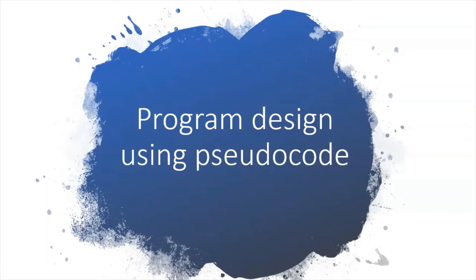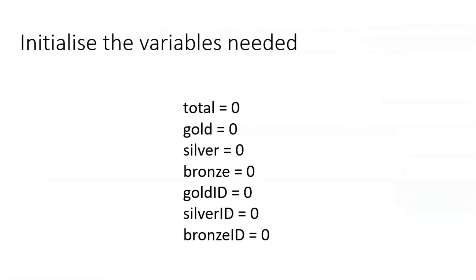Now let's look at some pseudocode — and again, I've linked in the description to a good image showing the Edexcel pseudocode conventions. First I need to initialize the variables: total, gold, silver, bronze — I need to record the total number and the number of books for gold, silver and bronze — and set them all to zero at the start. I also need gold ID, silver ID and bronze ID, because later I need to print out the name of the person who has gold, silver and bronze. I need the ID because there could be two people in the record with the same name.